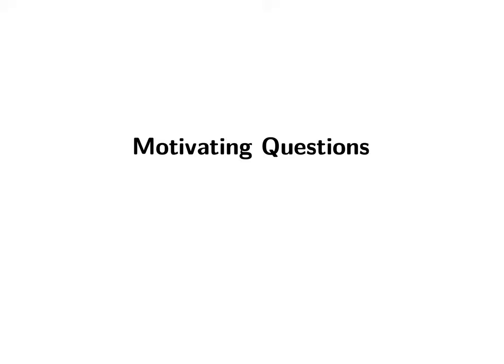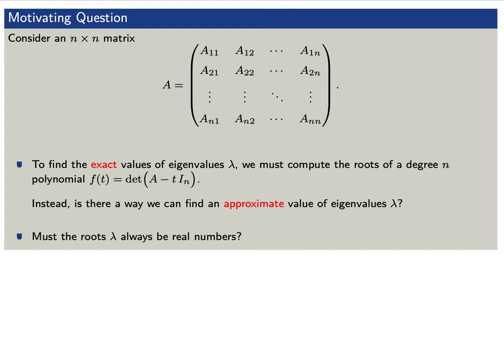Before we go further, we'd like to ask a couple of motivating questions. Let's consider an n by n square matrix A. We know that to find the exact values of the eigenvalues lambda, we must compute the roots of a degree n polynomial f of t — this is the characteristic polynomial. But computing the determinant of a matrix is a lot of work. Instead, is there a way we can find an approximate value of the eigenvalues?